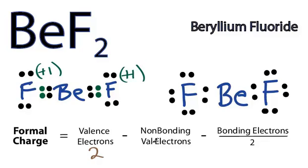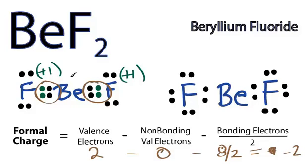For the beryllium, we have two valence electrons minus non-bonding. They're all involved in bonds. And then minus bonding, eight over two. Two minus eight over two gives us actually a minus two. So the formal charge on beryllium is minus two.